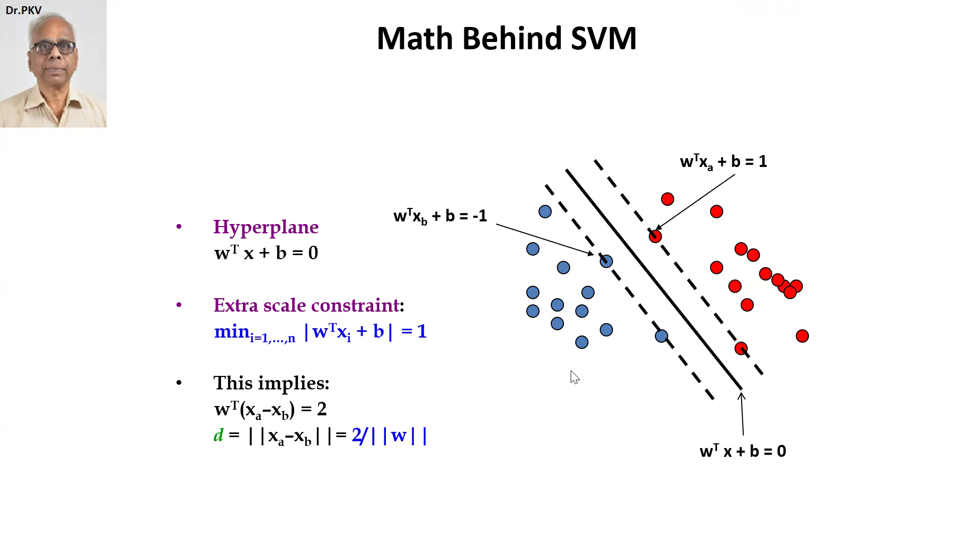And likewise, there is another line W transpose XA plus B is a positive plus 1. So one group is identified as minus 1, another group is identified as plus 1. So let's say default is plus 1. Non-default is minus 1 in the case of a bank giving loan to a customer. So it depends on how you put the numbers.